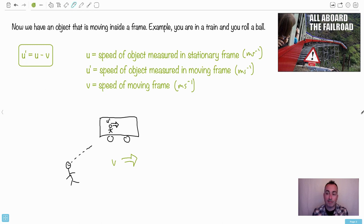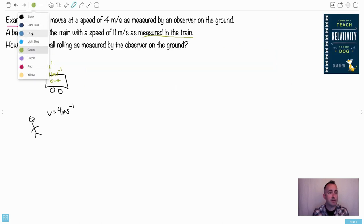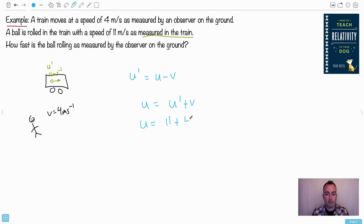So u prime equals u minus V. So I'm going to make sure to use that one. So u prime equals u minus V. I want u. I want to find this letter u. So what do I do to get u by itself? What do I do is I move the minus V over, it becomes a plus V, doesn't it? So u prime plus V, that would be u. And of course then that becomes, let's see, u prime was 11, V was 4, so that makes u equal to 15 meters per second.